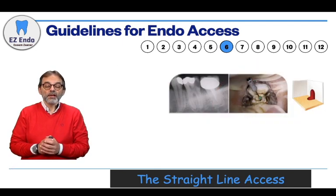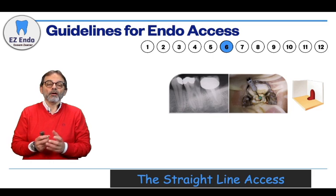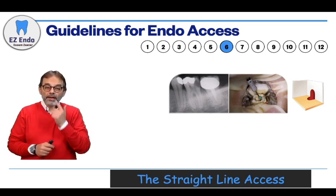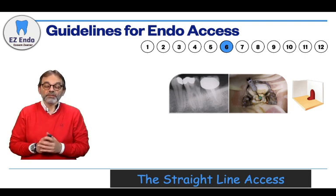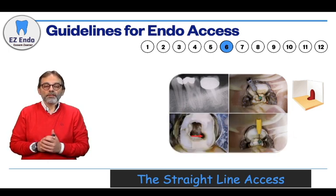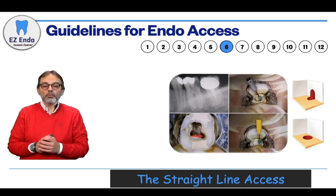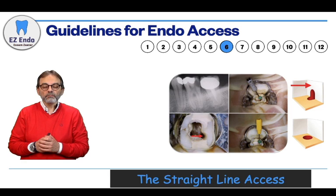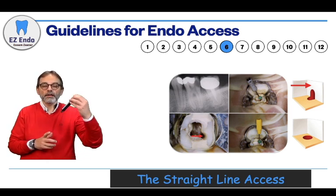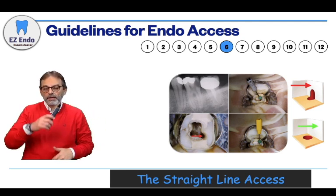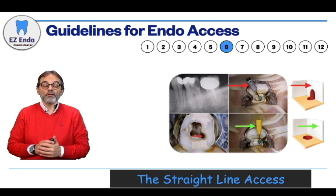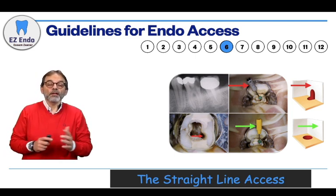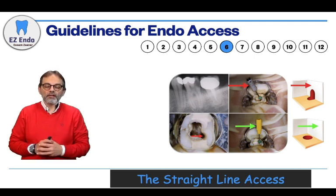Straight line access — as you can see on the diagram on the right — this is the situation where the orifice is partially on the floor and the rest on the wall, and that creates a very difficult situation sometimes, especially for inexperienced operators. The corrected version shows the orifice totally on the floor of the pulp chamber. The red arrow — both on the picture and the diagram — reflects the wall that you need to remove, shown in green. Clinically, you can see the direction of the file is cutting more straightened on the coronal aspect because of removing that interfering wall. This is what is meant by the straight line access.